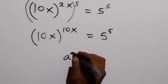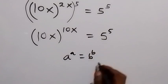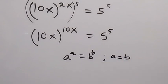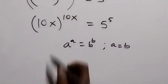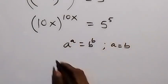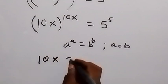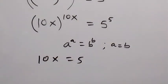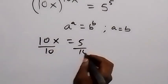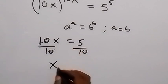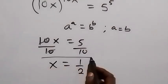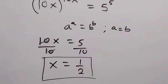From here, using the rule that if a raised to power a equals b raised to power b, then a equals b. We have 10x raised to power 10x equals 5 raised to power 5, so we can say 10x equals 5. Dividing both sides by 10, the 10s cancel and we get x equals 1 over 2.